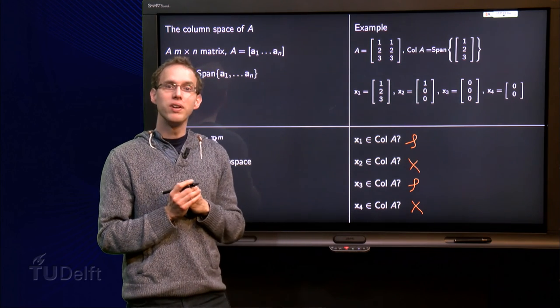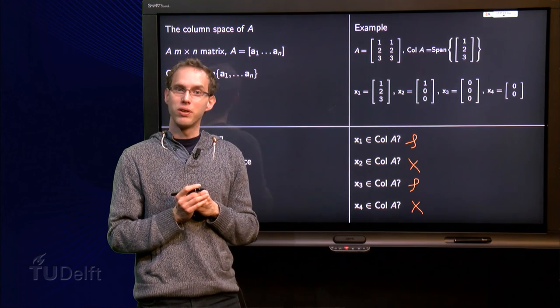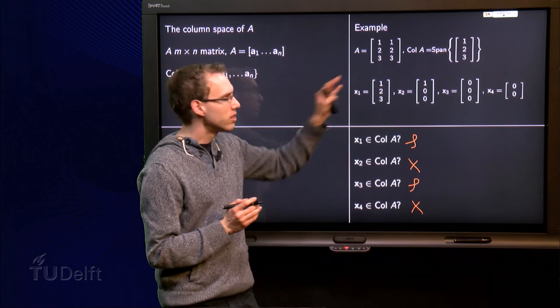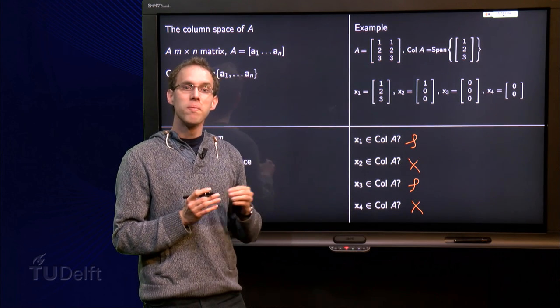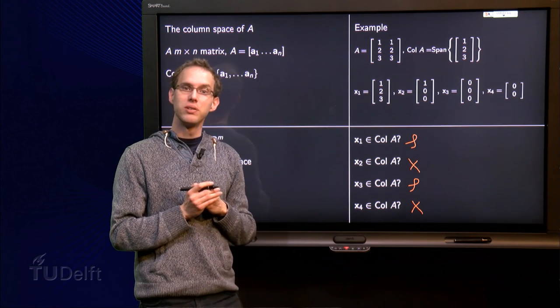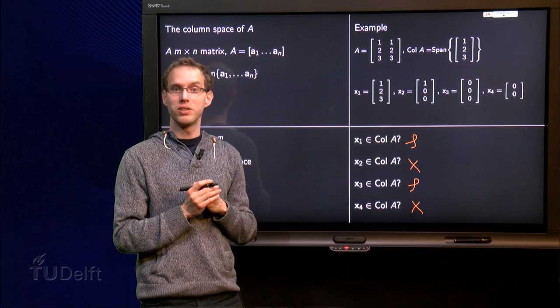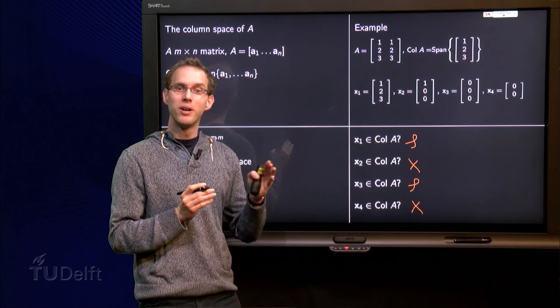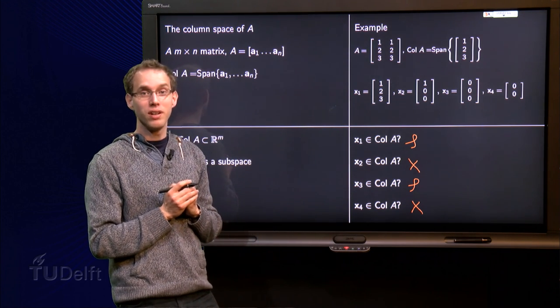So now we know the basics of the column space of A. We have seen some easy examples. Time to get to the next subspace. Wonder what that is? That will be the subject of another video.